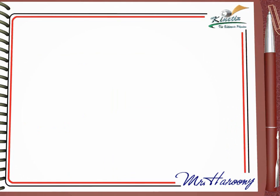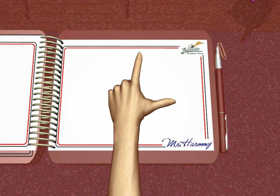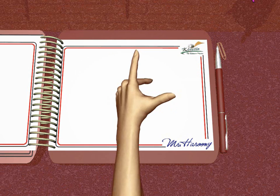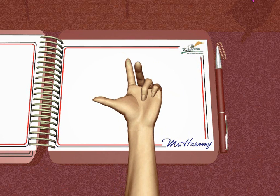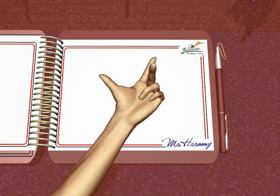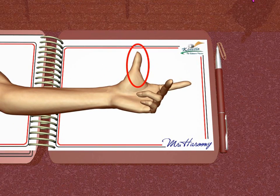Usually the question asks about the direction of the pushing force on the wire, which is given by the thumb. The directions are identified relative to the paper, not to the student. In one example the thumb points to the right of the page; in another it points to the left of the page; in another it points upwards toward the top of the page.